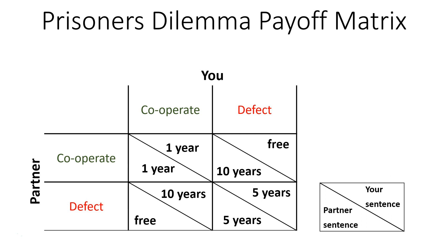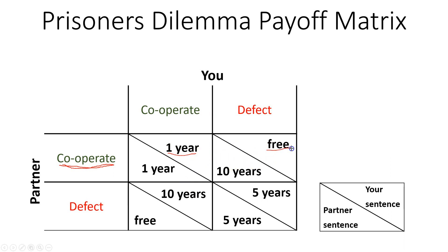The two arrested criminals are separated and urged to testify against their partner. Since neither has any idea what their partner is doing, they have to consider their own self-interest. There is something called an equilibrium condition. Let's take it from your point of view. If your partner cooperates, you have two options: cooperate or defect. If you cooperate, you get one year. If you defect, you go free. So logically, if your partner cooperates, you should defect.